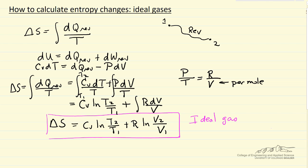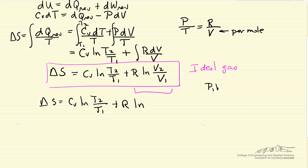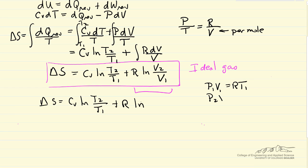I can rearrange this if I want to write it in terms of pressure and temperature by substituting into the term here, again using the ideal gas law. So let me rewrite this and then make that substitution. So P1 V1 equals R T1, and P2 V2 equals R T2. So if I divide the second equation by the first, V2 P2 over P1 V1 equals T2 over T1.